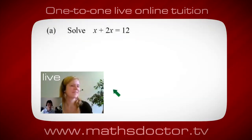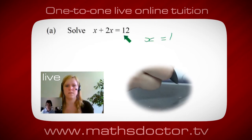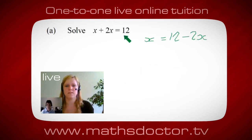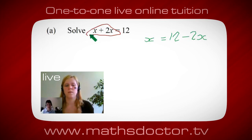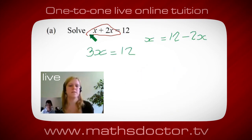Okay Marie, let's have a look at this one. Solve x plus 2x equals 12. What do you think you do first? I want x on its own, so I would put x equals 12 minus 2x. Okay, a lot of the time we want to get x by itself, but first we want to get all the x's together. Can you see what we can do? Oh, it's 3x isn't it? Yeah absolutely. So 3x equals 12, and so x equals 4. Brilliant, spot on, well done.